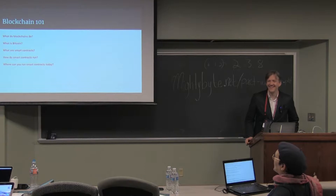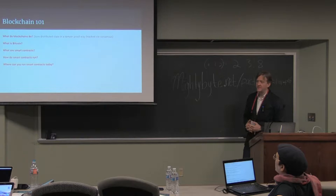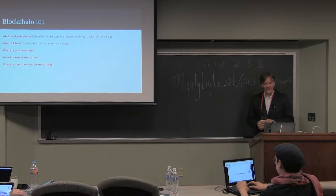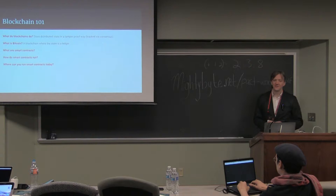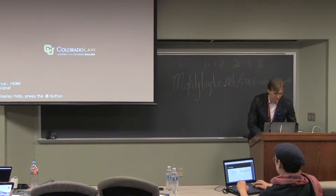And where can you run smart contracts today? On everyone else's machines — exactly. My answer to these questions: what do blockchains do? They store distributed state in a tamper-proof way, tracked by distributed consensus. Bitcoin is basically that, where the state we're storing is a ledger — a distributed tamper-proof ledger — and it just so happens that allows us to behave like a currency and transmit value that is scarce.